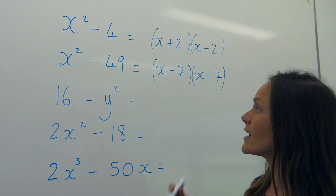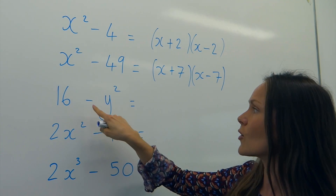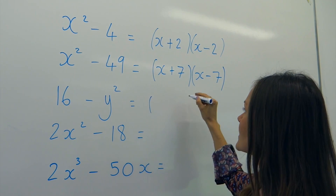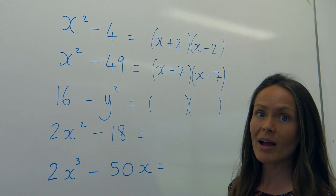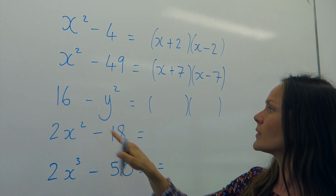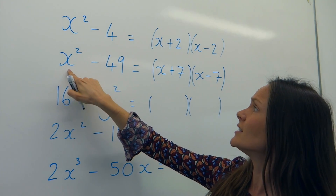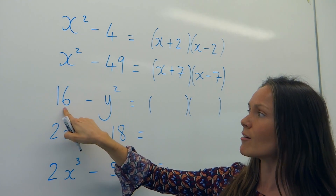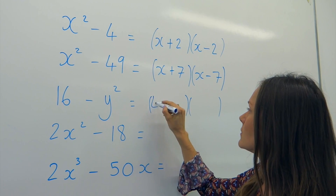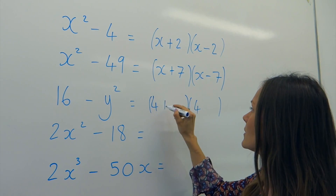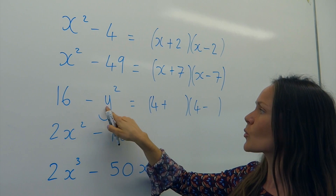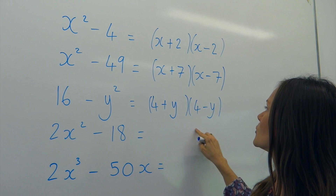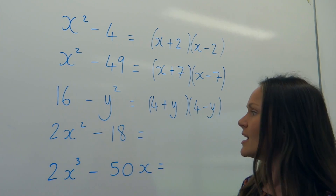The next one is also the difference of two squares — there's a difference, a square number, and a square letter. It's the same setup with double brackets, but this time the number goes first. The square root of 16 is 4, then we do plus and minus, and the square root of y squared is just y, because y multiplied by negative y gives negative y squared.